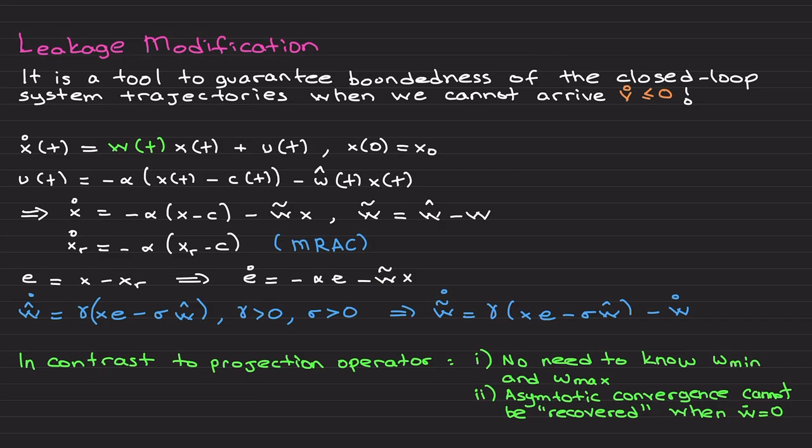Here is the parameter update law with leakage modification. Gamma and sigma are positive terms. What this does is, let's say this term is considerably small because we make error small. Then w hat dot approximately becomes minus gamma sigma w hat.